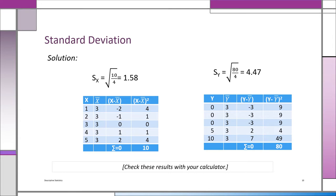Now look at y. The deviations are much larger — minus 3, minus 3, minus 3, plus 2, and plus 7. Squaring and summing gives a sum of squares of 80. Taking 80 divided by 4 and the square root gives the square root of 20, which is 4.47. The standard deviation for y is 4.47 versus 1.58 for x — confirming that the variability of the y data set is much greater.